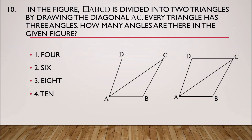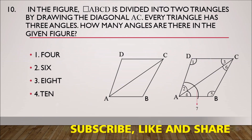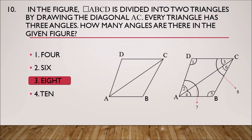Here is the explanation. Two triangles are joined together. In triangle ADC: angle D is the 1st, angle DAC is the 2nd, angle DCA is the 3rd. In triangle ABC: angle CAB is the 4th, angle B is the 5th, angle BCA is the 6th. Then angle DAB is the 7th, and angle ACB is the 8th. So altogether there are 8 angles in quadrilateral ABCD. The third option, 8 angles, is the correct answer.